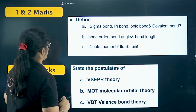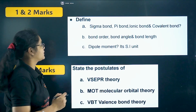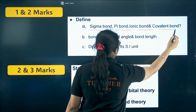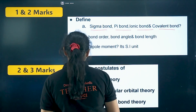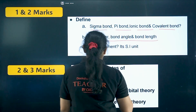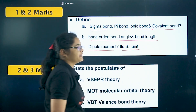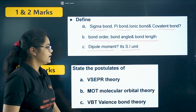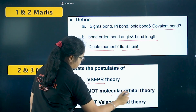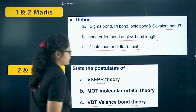Moving to the next chapter: Chemical Bonding. For one and two marker questions, you should know the definitions of sigma bond, pi bond, ionic bond, and covalent bond. Next: bond order, bond angle, and bond length. Next, dipole moment and its SI unit. Now coming to the postulates of VSEPR theory, molecular orbital theory (MOT), and valence bond theory — these are all things you should remember.